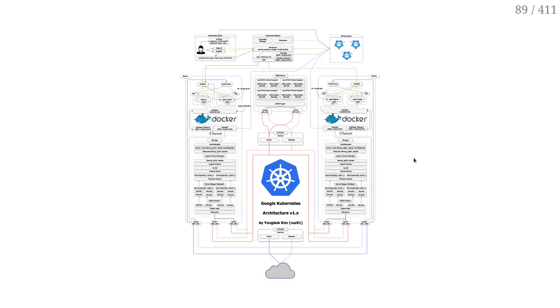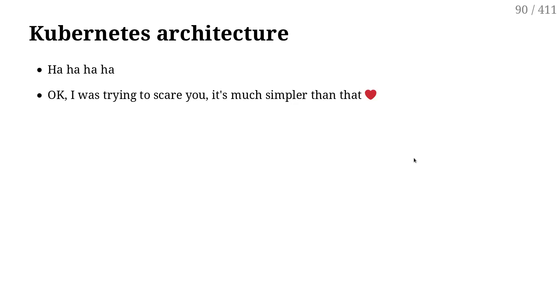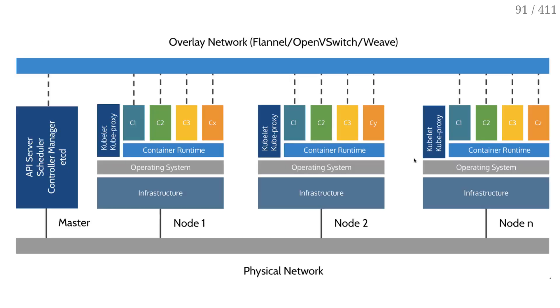Let's see another approach — a diagram showing the architecture of Kubernetes. As you can see, it's very simple. This is a real Kubernetes infrastructure diagram, but it's more like a troll than a useful learning diagram. This is a more realistic diagram of Kubernetes.